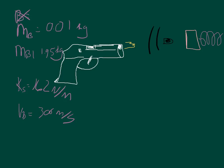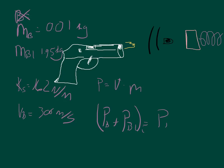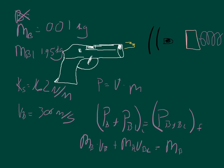What we can do is set up a conservation of momentum. Momentum equals velocity times mass. For a perfectly inelastic collision, the momentum of the bullet plus the momentum of the block initially is equal to the momentum of the bullet plus the block in the final state. So: mass of the bullet times velocity of the bullet plus mass of the block times velocity of the block equals mass of the bullet plus block times their final velocity.